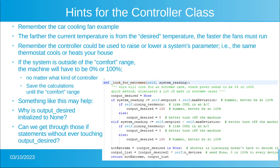Remember the cooling fan example: the further the current temperature is from the desired temperature, the faster the fans must run. Remember the controller could be used to raise or lower a system's parameter — the same thermostat cools or heats your house. If the system is outside the comfort range, the machine defaults to either full-on or full-off regardless of controller type. Save the calculations for when you're within the comfort range.